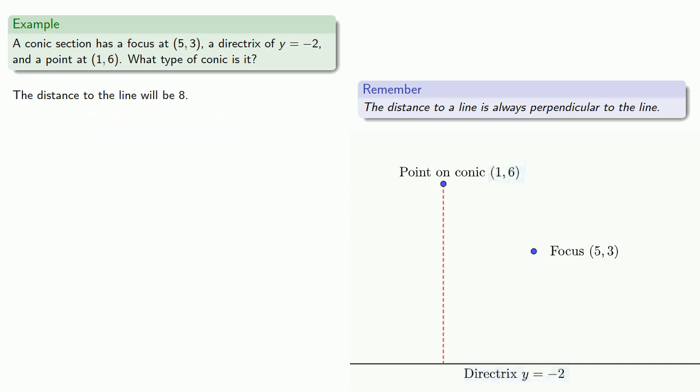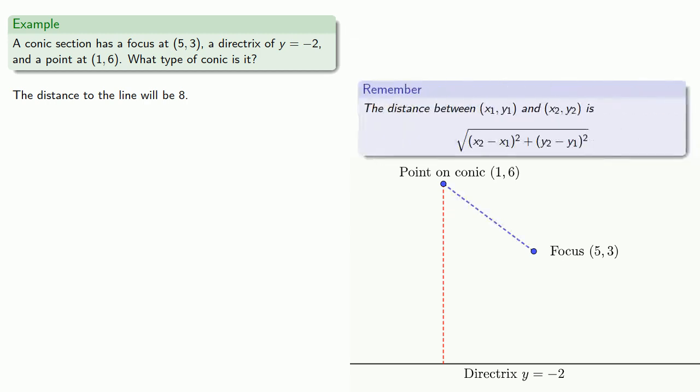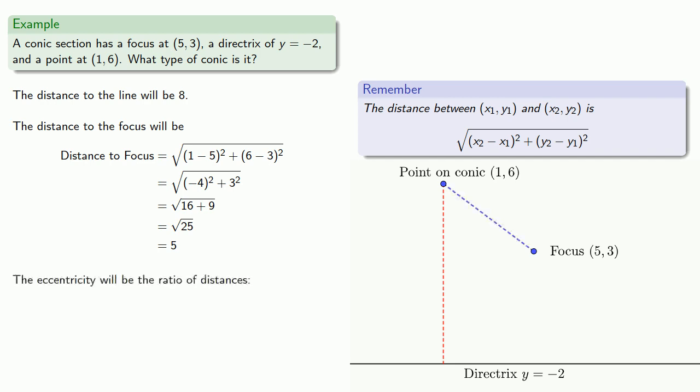Meanwhile, the distance to the focus, for that we can use our distance formula. And, so we find that the distance to the focus will be, we'll find the eccentricity, that's the ratio of the distances, distance to focus divided by distance to line. And, that's going to be 5 eighths, and since our eccentricity is less than 1, the conic section is an ellipse.